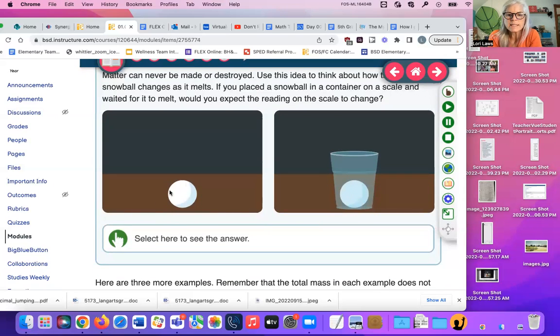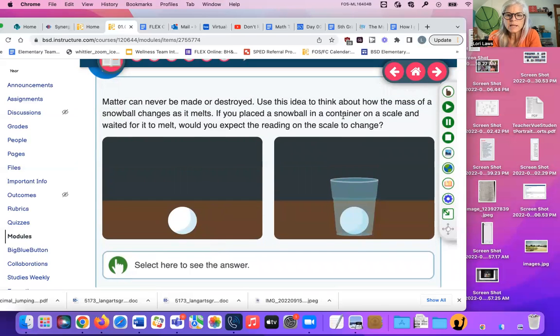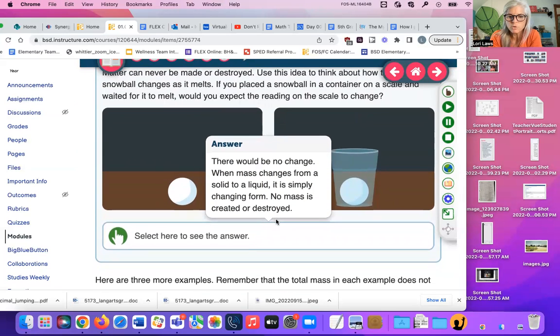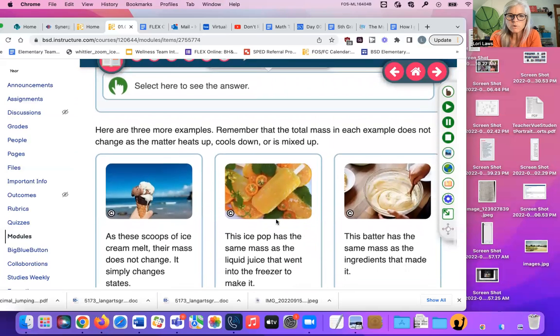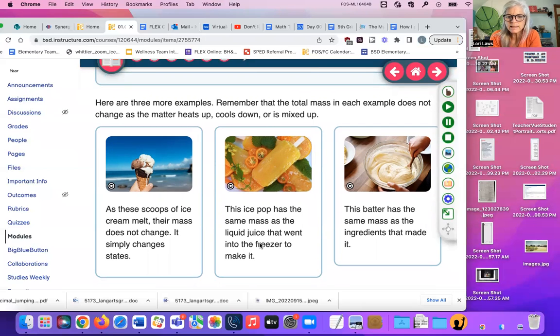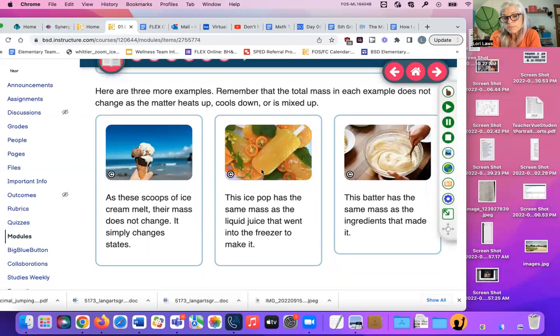Here we're going to talk about a snowball changing as it melts. If you place a snowball in a container on a scale and waited for it to melt, would you expect the reading on the scale to change? What do you think? As it melts, will it change and get lighter or heavier or stay the same? Nope, not going to change, huh? There would be no change. When mass changes from a solid to a liquid, it's simply changing form. No mass has been created or destroyed. As the scoops of ice cream melt, their mass does not change. It simply changes state. The ice pop has the same mass as the liquid juice that went into the freezer. But it takes up more space. This batter has the same mass as the ingredients that made it.